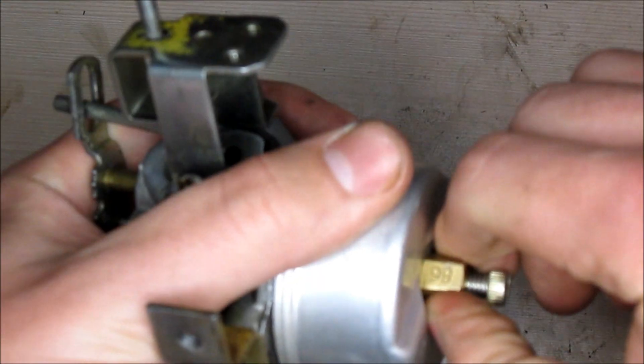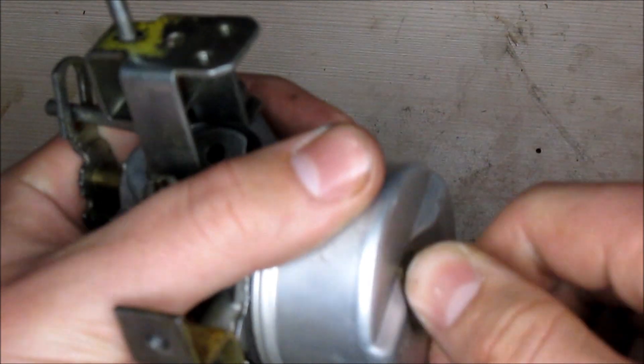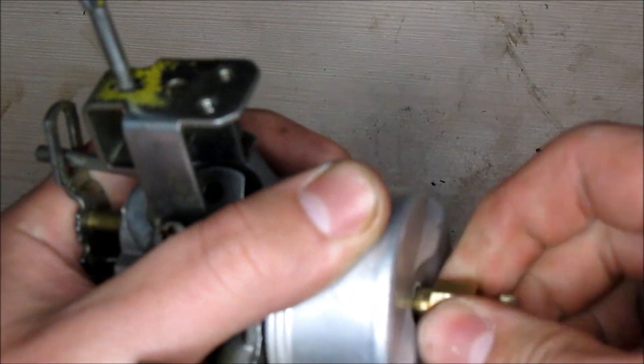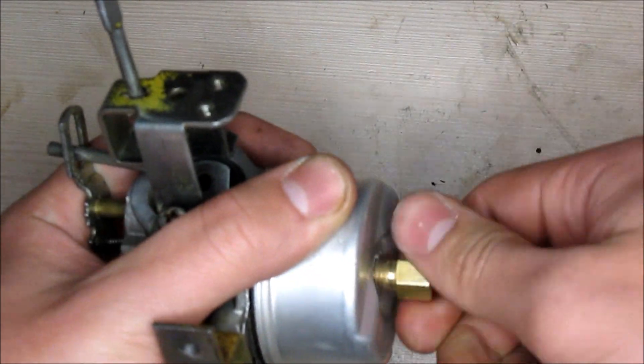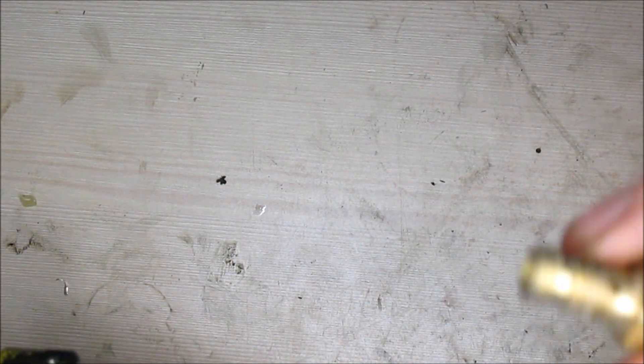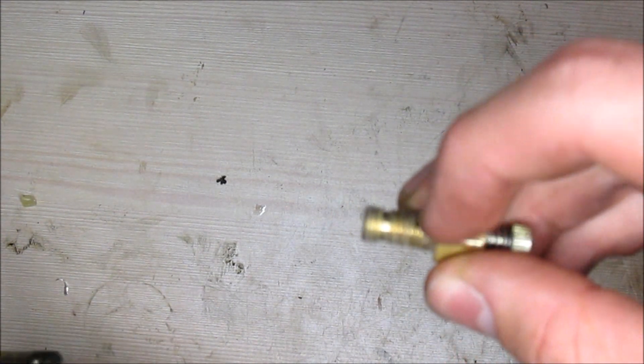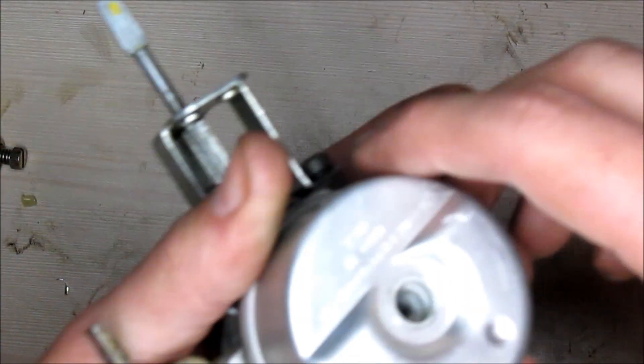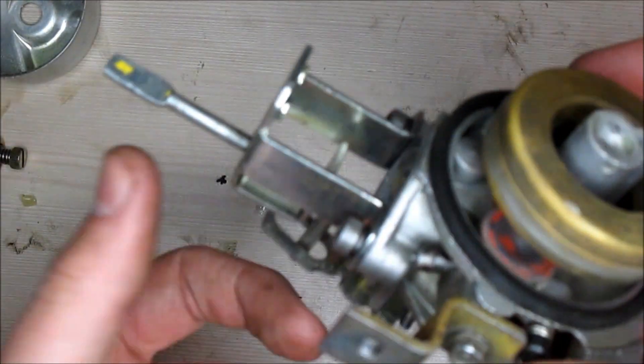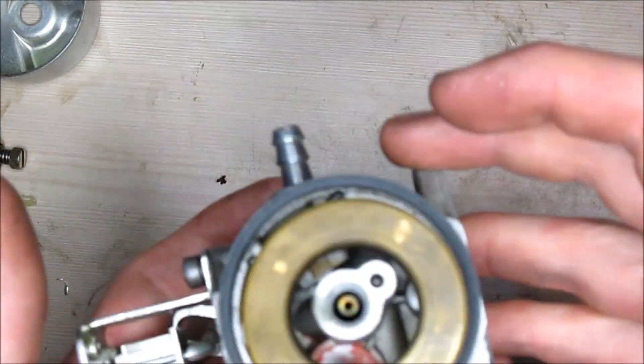Once you get it loose, you can also just hand-turn it off. You want to put this aside because your jet is also in this screw, right there. And you want to remove the bowl itself. And here you go. This is what it looks like inside your carburetor. In this case, this one is actually pretty clean.